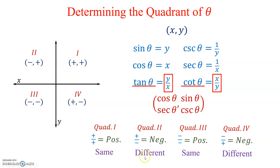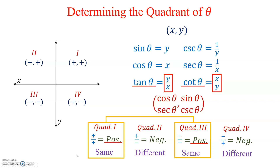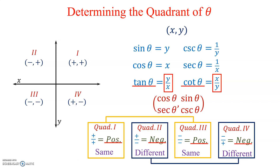Looking at all four scenarios, when tangent or cotangent is positive they are located in either quadrant 1 or quadrant 3. Inversely, when tangent or cotangent is negative they are located in either quadrant 2 or quadrant 4.